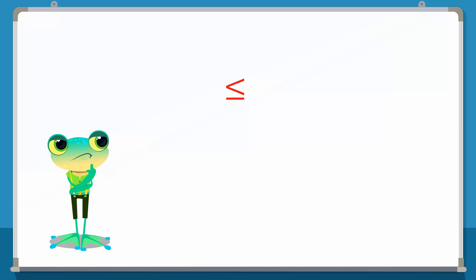It is, in fact, the less than symbol with a line under it. From our example, Junaid's score is less than or equal to 15, which means that Junaid can score runs from 0 to 15.